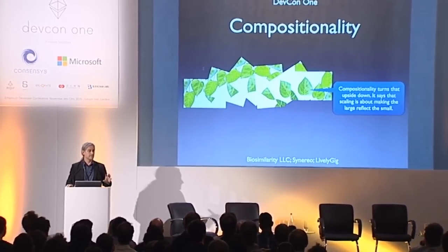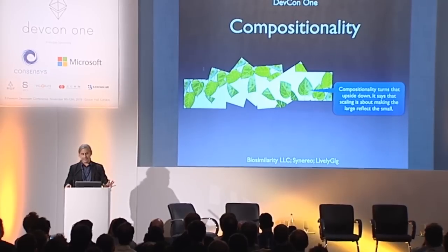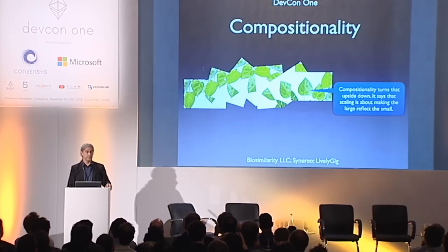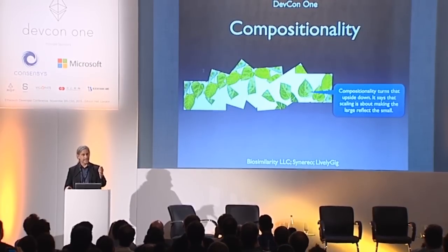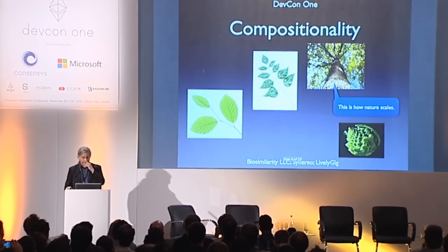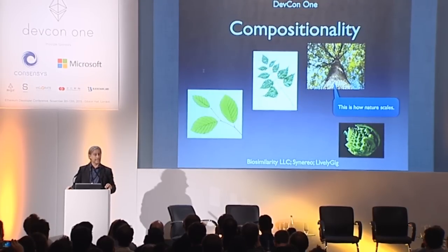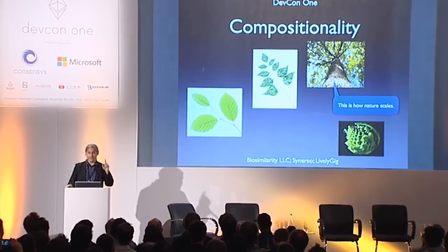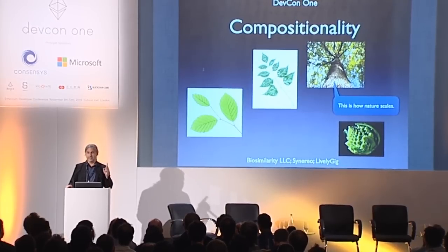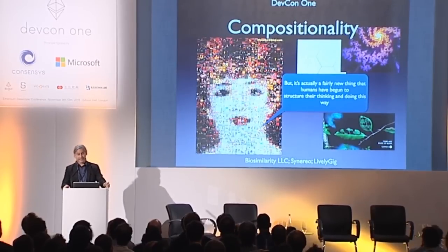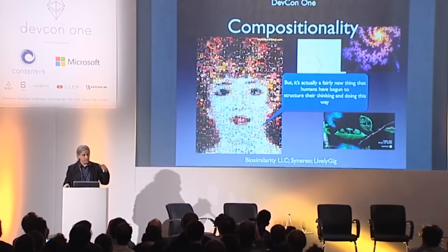What compositionality says is that scaling is about making the large reflect the small. Every child understands this idea — they hold up a leaf, look at it, and say, 'there's a tree inside this leaf.' That is, in fact, how nature scales. We see it again and again. It's kind of funny why we forget this — it turns out it's actually a fairly new thing for culture to remember it.